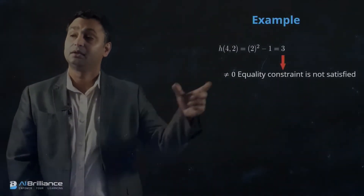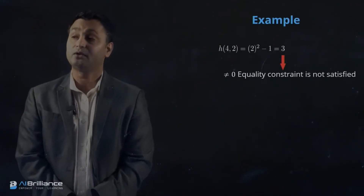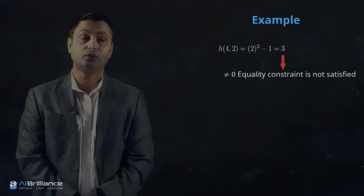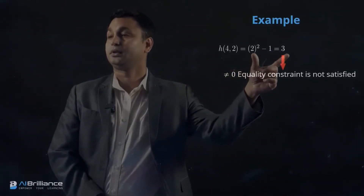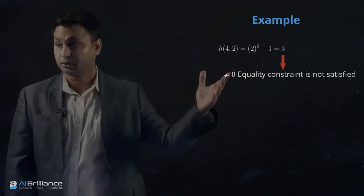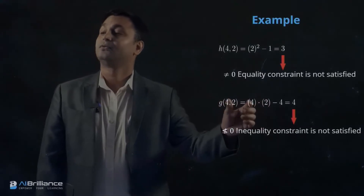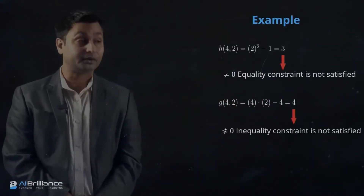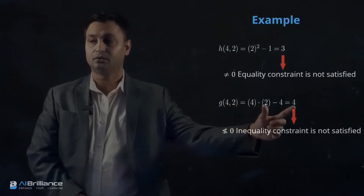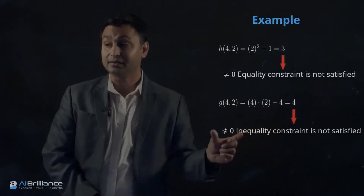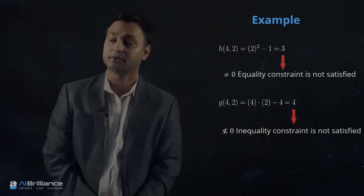The second thing we do is check whether the equality constraint is satisfied. If we substitute x1=4 and x2=2 into the equality constraint, that equals 3, which is not equal to 0 — so the equality constraint is not satisfied. Similarly, we check the inequality constraint: g(4,2) = 4, which is greater than 0, so the inequality constraint is also not satisfied.